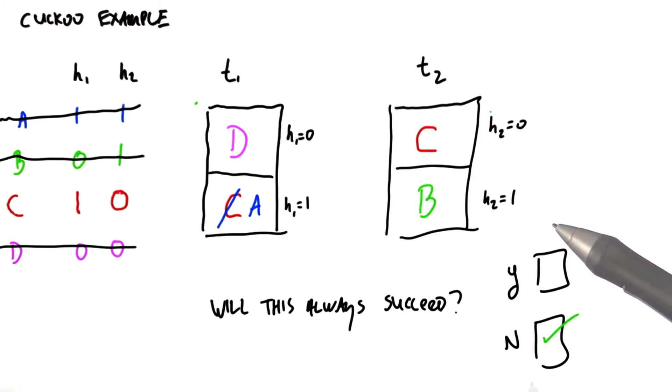So in practice, we choose a certain number of iterations, and we continue to iterate trying to fill up this hash table until we decide that we've done too many iterations.